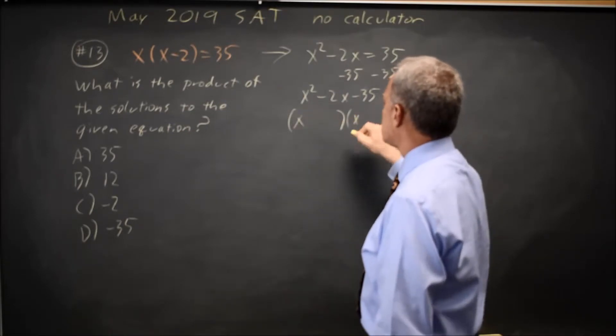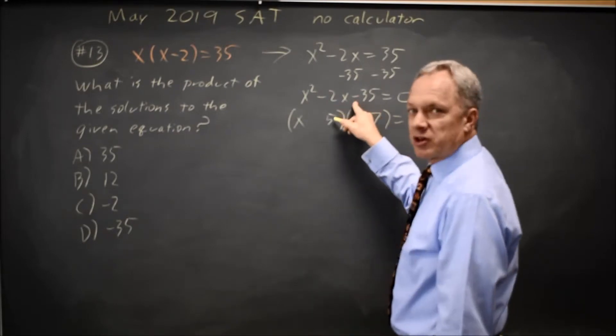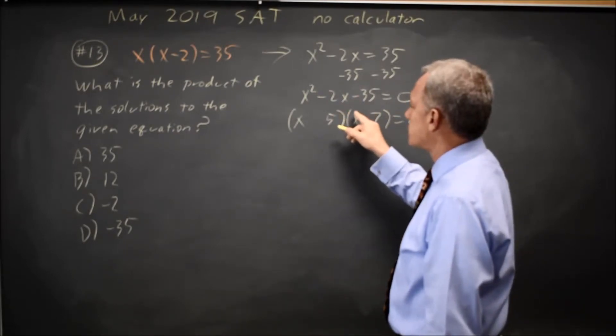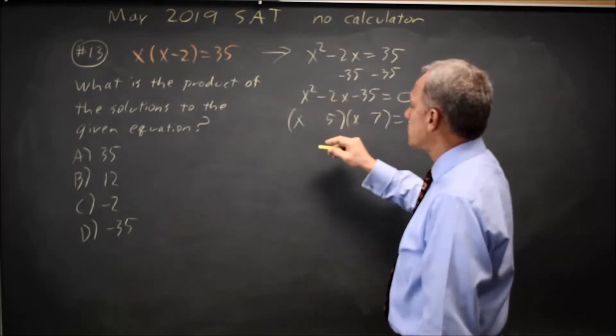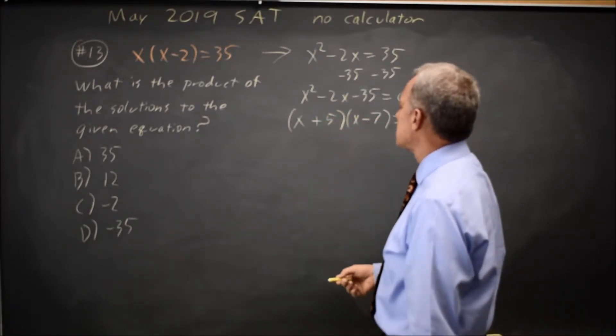We have x and x. Two numbers whose product is 35 would be 5 and 7. Since 35 is negative, one of them is negative and one is positive, and since the middle term is negative, the larger of the two is negative, so x plus 5, x minus 7.